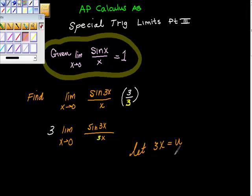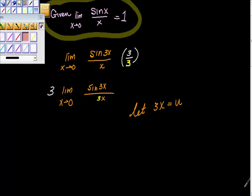So if you think about this, 3x can't go to 0 unless u goes to 0 and vice versa, right? So that's a little bit of arithmetic that we had to take care of here.